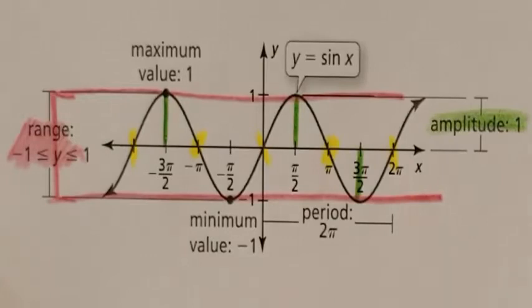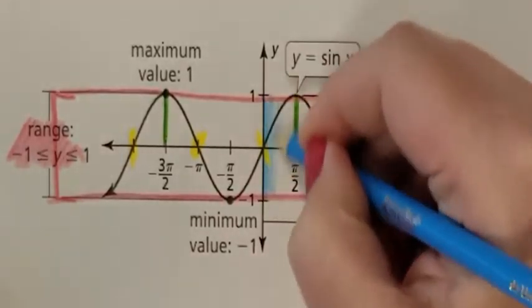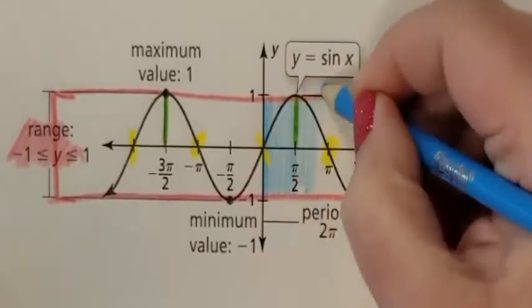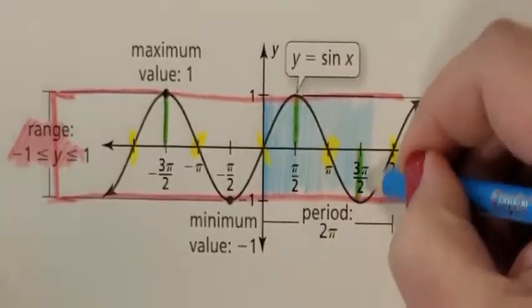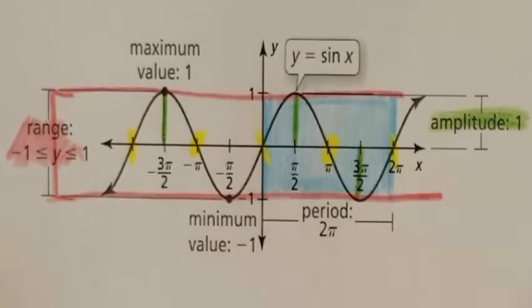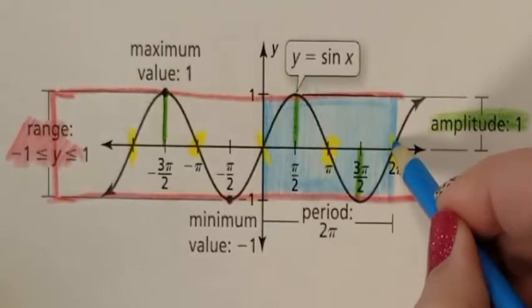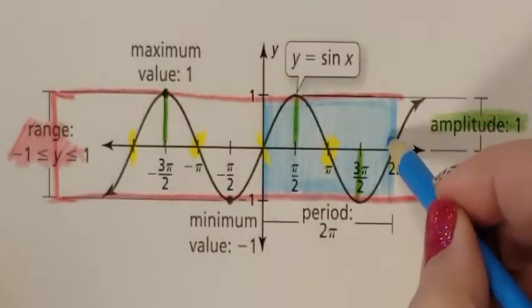The last term you need to see is the word period. Period is how long it takes until it repeats. Our repeat starts here, and will continue until it gets to that point again, which is right here. So this one segment is the segment that's repeated. Starts at zero, up, down, stop. That is the repeated segment.